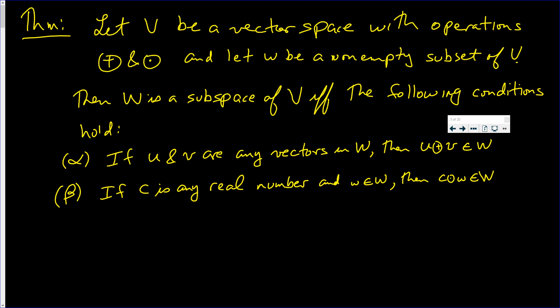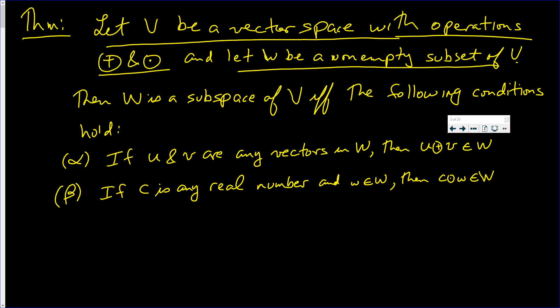In this video we're going to derive a test to show that W, which is a subset of V, is in fact a subspace of V. Let us state the theorem more formally. Let V be a vector space with plus and scalar multiplication as its operations, and let W be a non-empty subset of V — just a collection of vectors in V. It's not yet a vector space or a subspace; all we know is it's not empty. W is a subspace of V if and only if these two conditions hold.